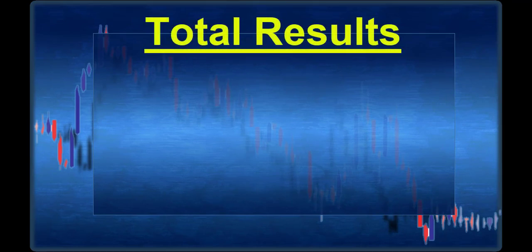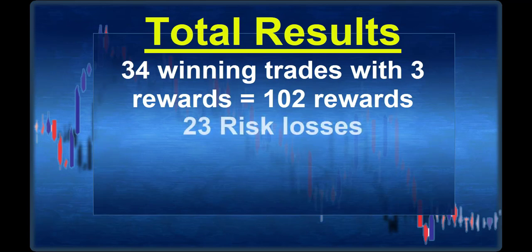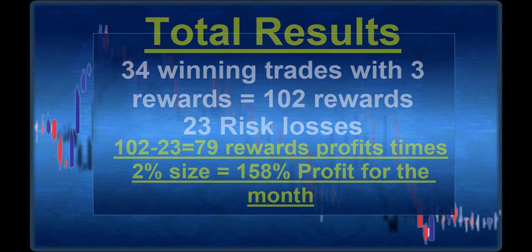So let me count the total. There are 34 winning trades with 3 reward, which means 102 reward, and there are 23 losing trades with 1 risk — so 102 minus 23 equals 79 reward profit in one month, using only the V-shape daily levels. This makes an overall 158% profit of your account using this specific way of plotting levels and the four-hour swing strategy. I made this video to prove with live charts and live examples how this V-shape formation can work very well from the daily chart. I hope you learned something, and if you have any questions, ask me.